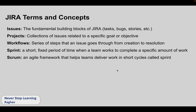Scrum is an agile framework that helps teams deliver work in short cycles called Sprints. Scrum and Sprints are used in Scrum projects, which follow the agile framework. We take small cycles, add our work, and work on those project items with complete focus in these short cycles, then review progress. That is why we have a separate project type called Scrum in Jira.